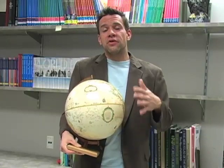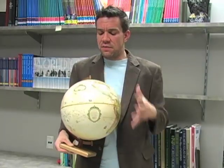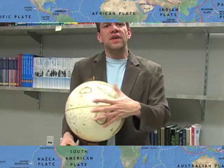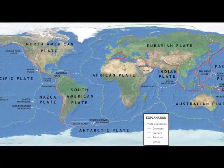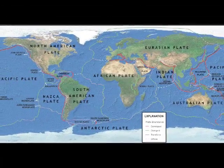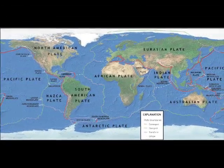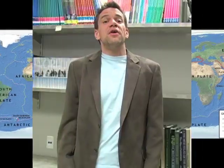Now as many of you may know, Earth's outer shell is made up of rocky plates. These are little pieces that combine together and sort of fit like a puzzle to make up the outside of Earth. And between these plates, there are boundaries. Now there are several different kinds of boundaries between plates.